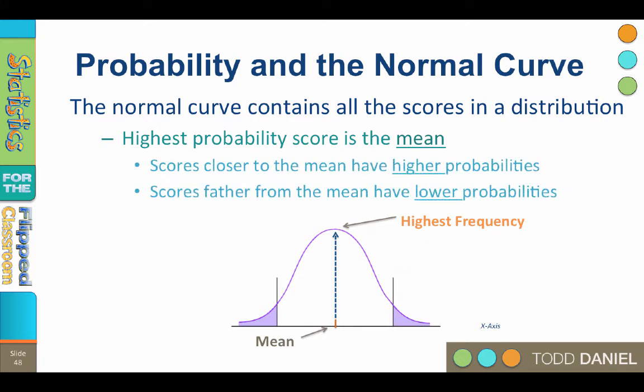Scores closer to the mean have higher probabilities. Scores further from the mean have lower probabilities. Scores on the x-axis that are far from the mean have low frequency—there are very few of those scores.